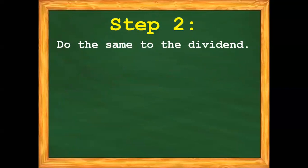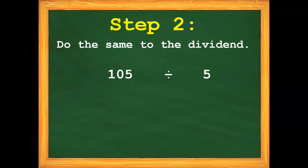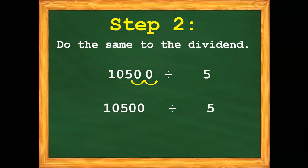Step 2: Do the same to the dividend. Our dividend is 105, so we need to move twice from its decimal point. Since there are vacant spaces, we need to put a place value holder, which is 0. So we have now 10,500 divided by 5.